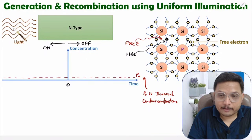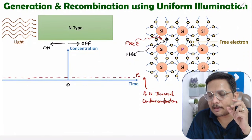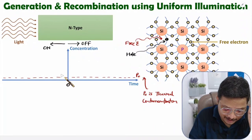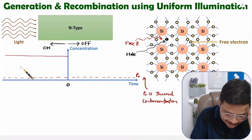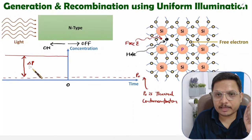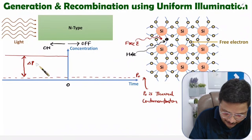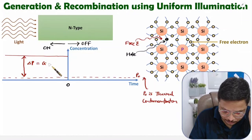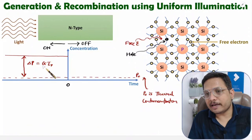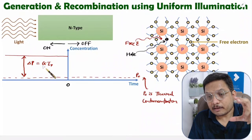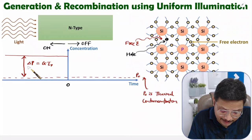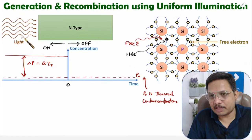Now, what happens due to light? As light falls on the material, there is generation of electron-hole pairs. Let us say there is a generation of delta P — the additional concentration of minority carriers generated due to light. The value of delta P equals the generation rate multiplied by the lifetime of holes: generation rate into lifetime of hole concentration generated per volume per second. This additional delta P is generated because of the light illumination.